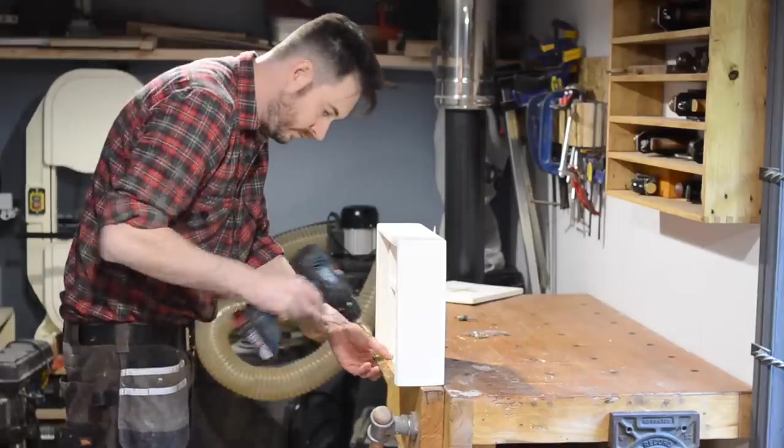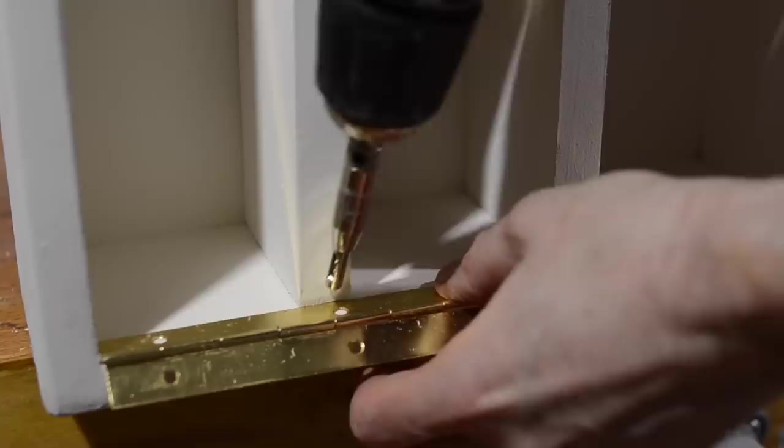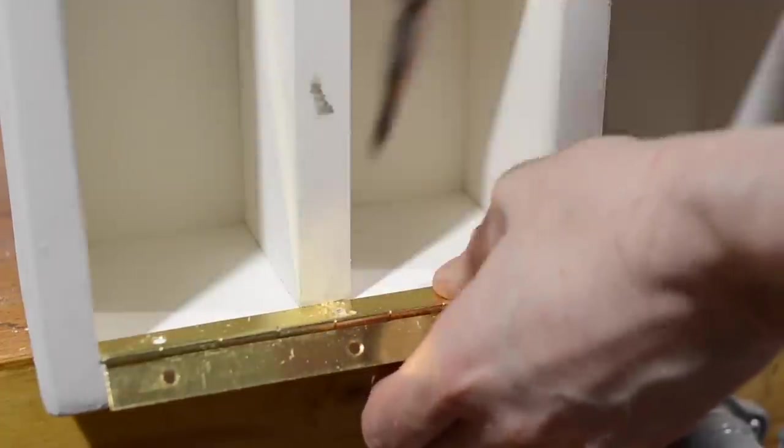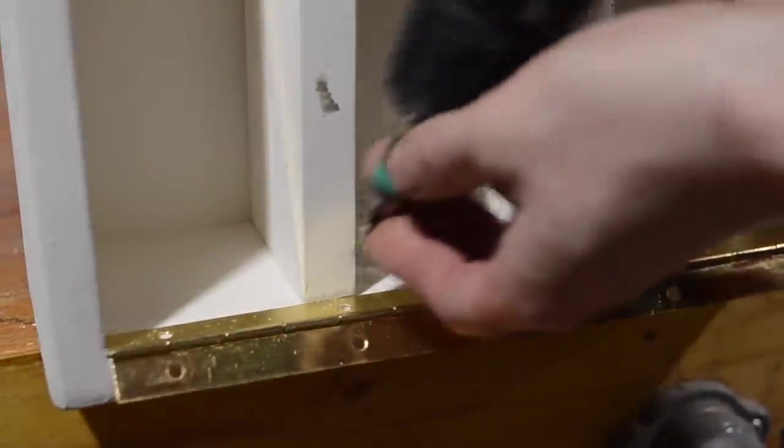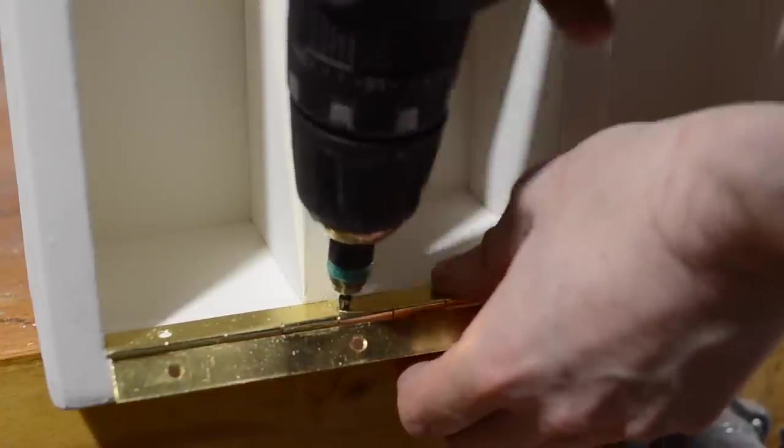I can now get the brass piano hinges fitted. Using one of these self centering drill bits makes fitting hinges so much easier. With the holes drilled I get some little 2.5mm screws in place, and that's all the hardware fitted.